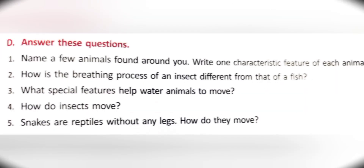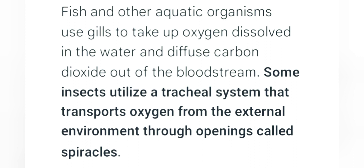Question two: How is the breathing process of an insect different from that of a fish? Answer: Fish and other aquatic organisms use gills to take up oxygen dissolved in water and diffuse carbon dioxide out of the bloodstream. Some insects utilize a tracheal system that transports oxygen from the external environment through openings called spiracles.